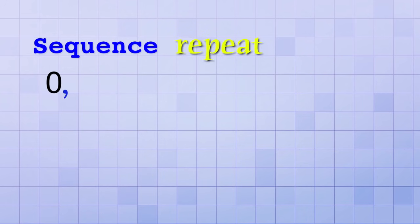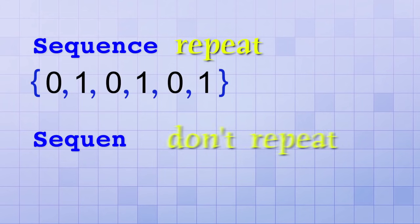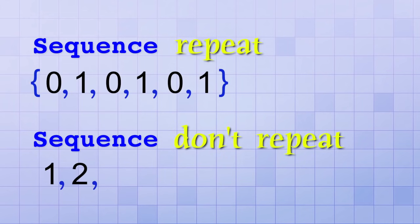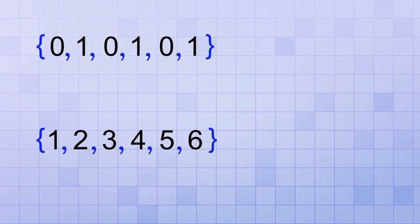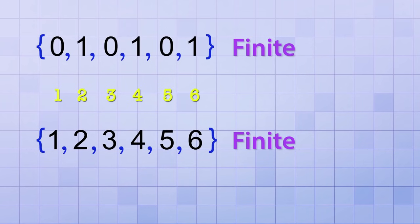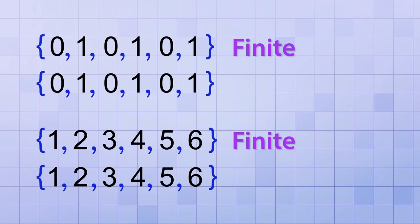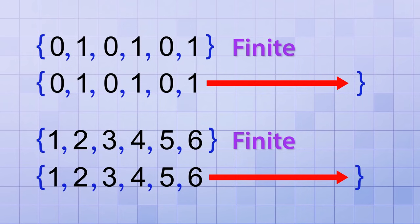Some sequences of numbers repeat, like the sequence 0, 1, 0, 1, 0, 1, but some don't repeat, like the sequence 1, 2, 3, 4, 5, 6. Right now, each of them contains a limited or finite number of elements — they each have 6. But each of these sequences could be continued forever if we wanted to. We could just keep repeating 0, 1, 0, 1 forever, or we could just keep counting 7, 8, 9, 10 forever.